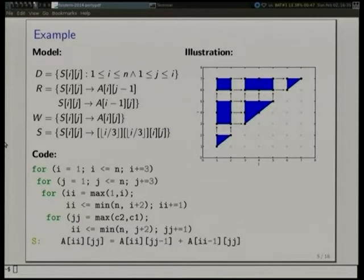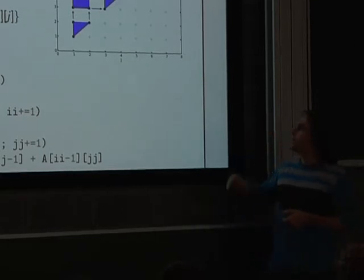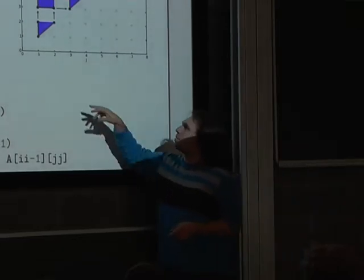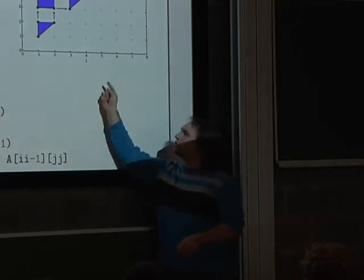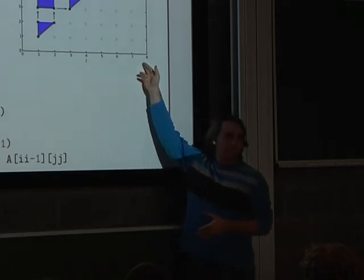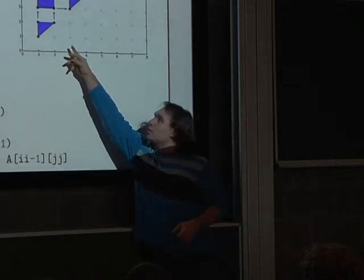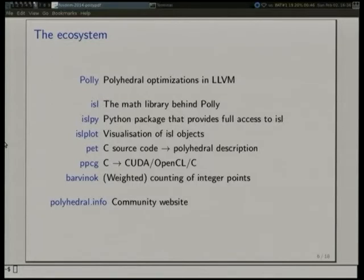This allows us to group the statement instances into blocks. This blocking is very effective if you want to optimize for data locality - people call it cache blocking or register blocking depending on which level you apply it. It allows you to take advantage of data reuse. Normally you would execute all the points on one line, then all the points on the next line, and whenever you reach the first point again all the values stored in your cache have been pushed out because so much computation happened in between. If you do the computation locally within one block, you still have all your values in cache and the program is extremely fast.